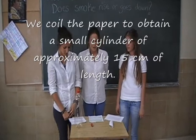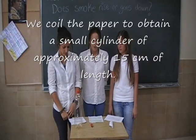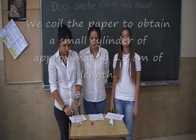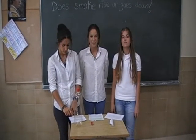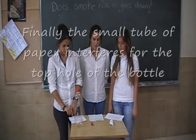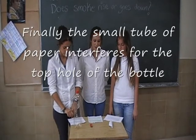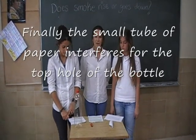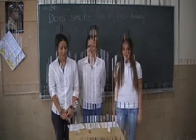We coil the paper to obtain a small cylinder of approximately 15 cm in length. Finally, the small tube of paper is inserted through the top hole of the bottle.